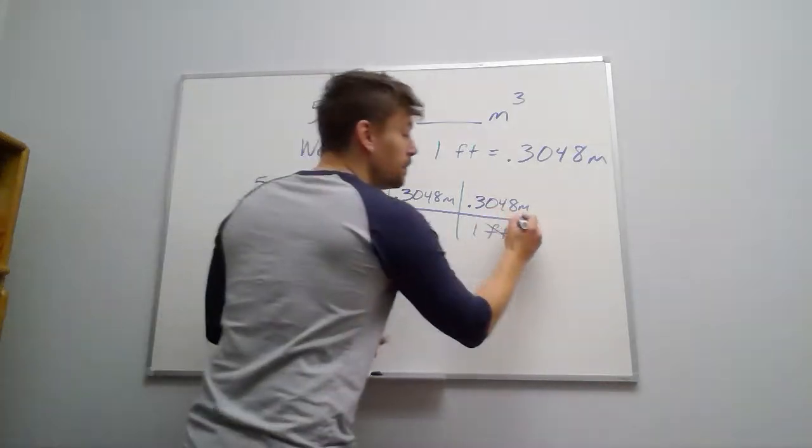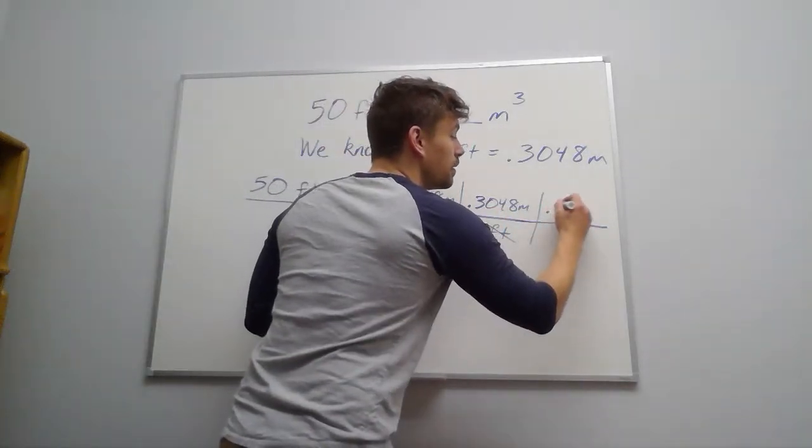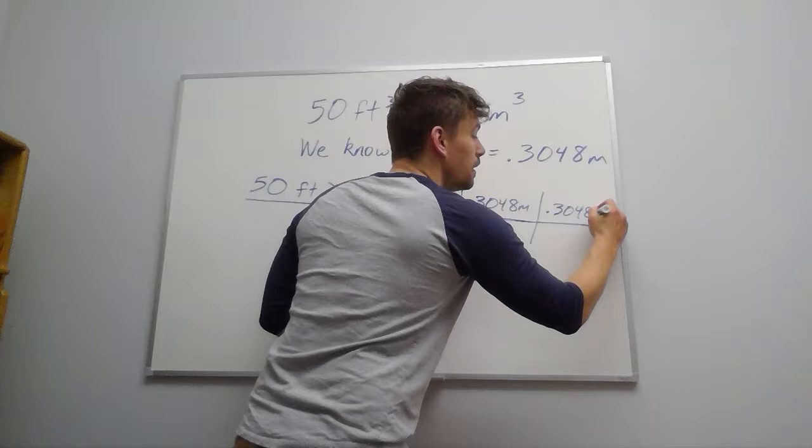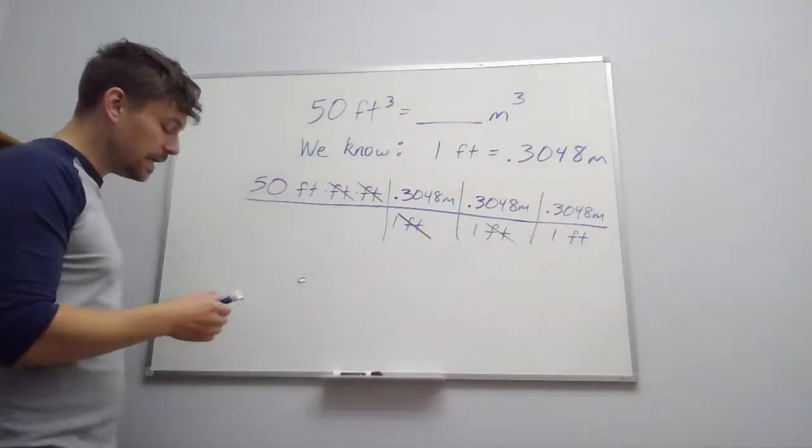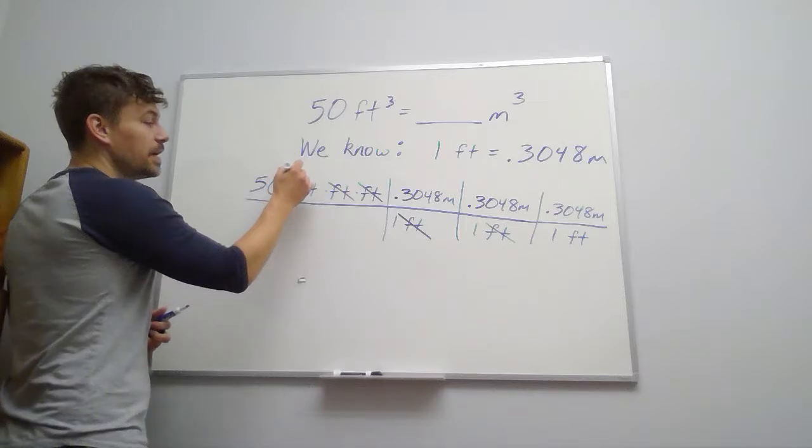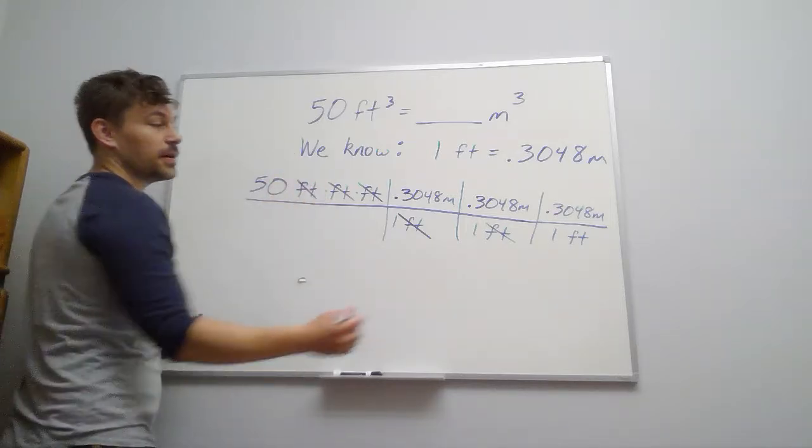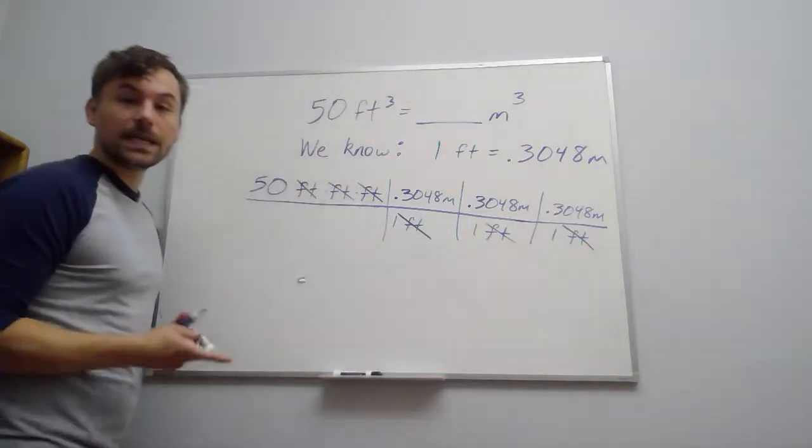So do this one more time. 0.3048 meters for one foot. And then we can say, great. There's our last unit of feet getting canceled.